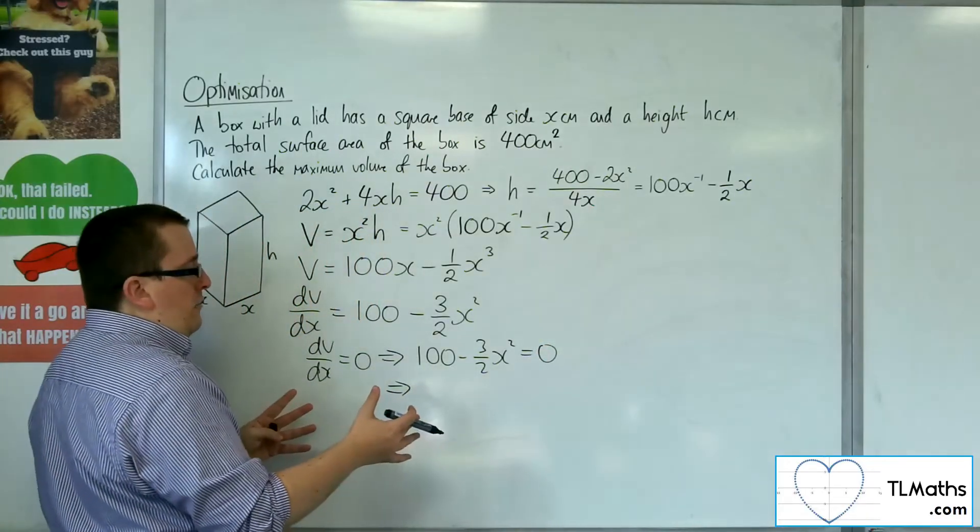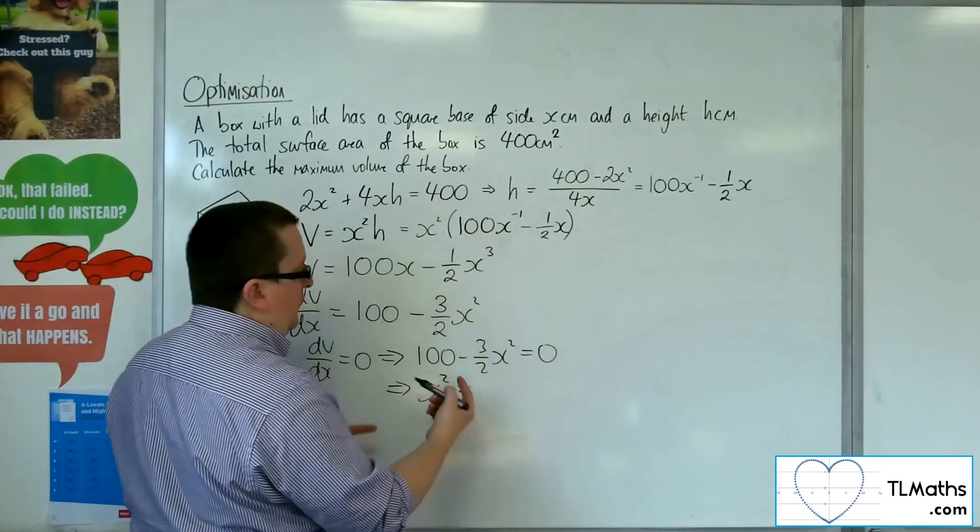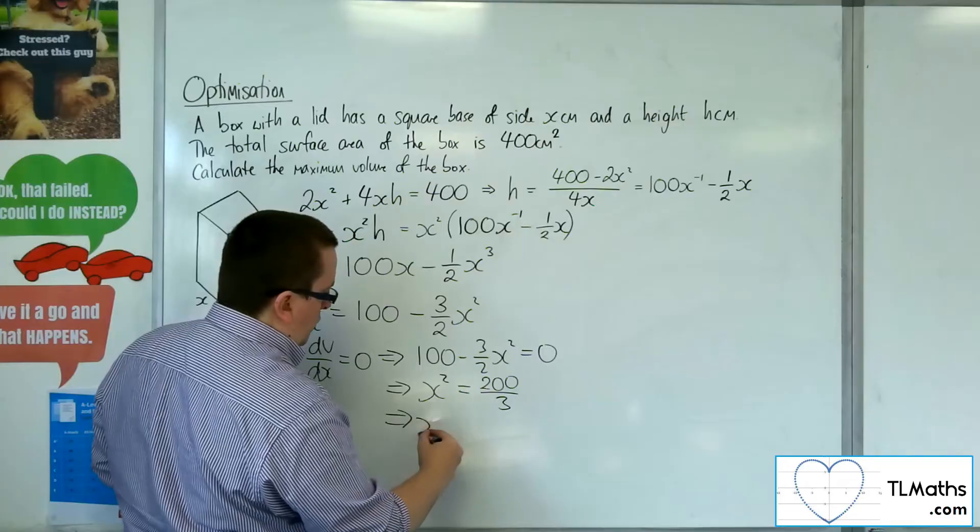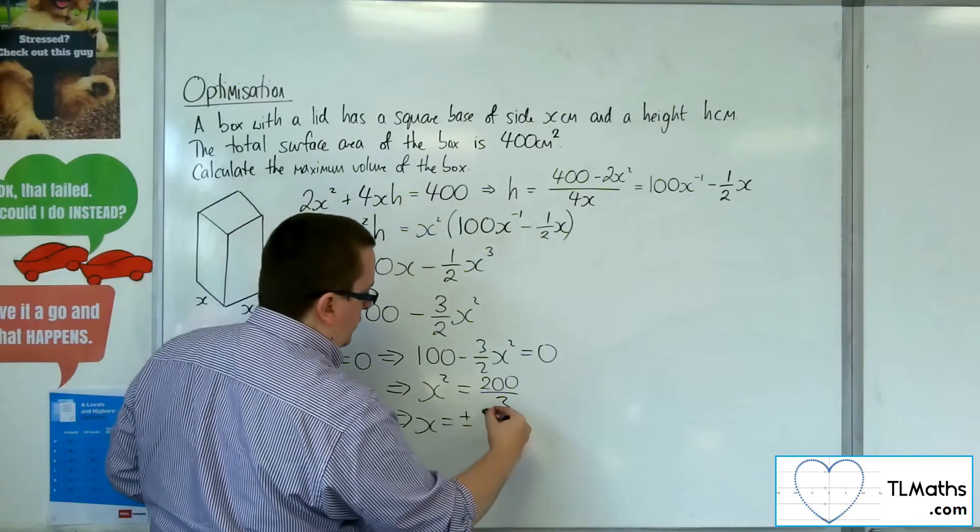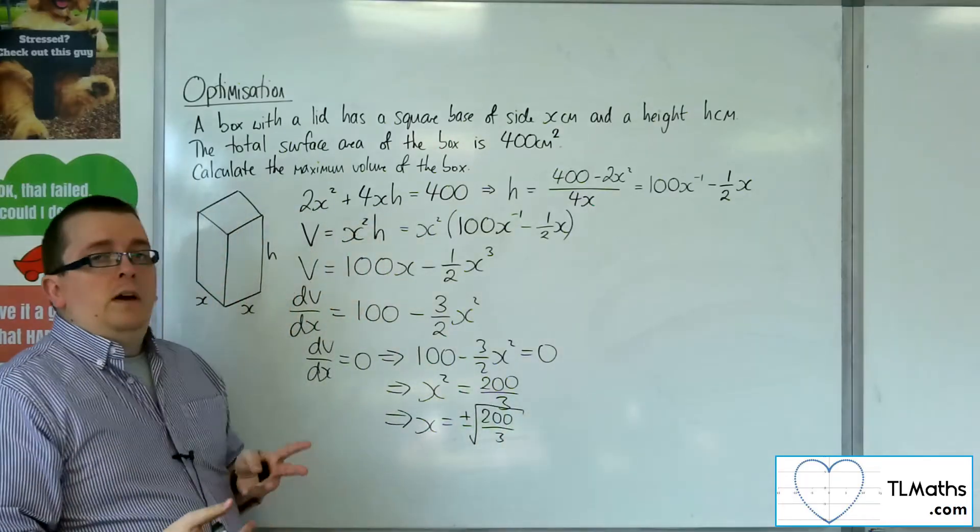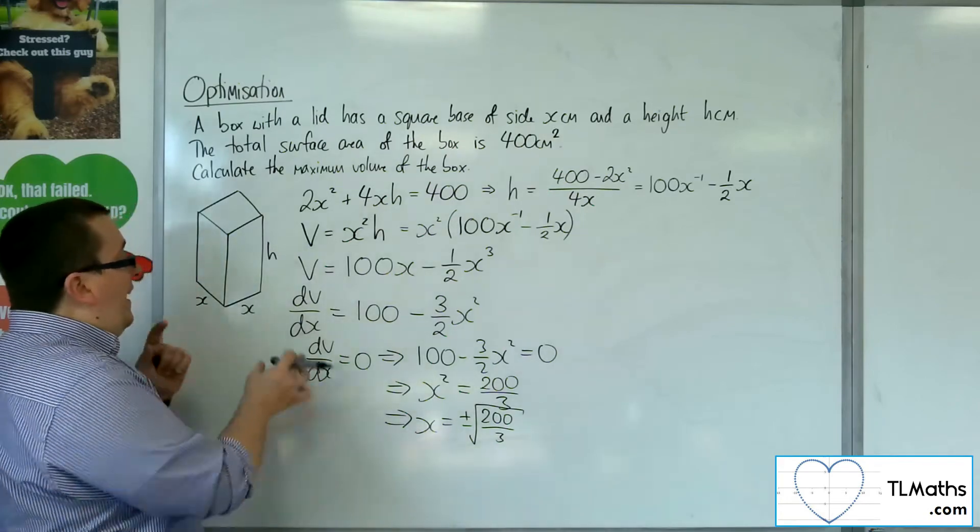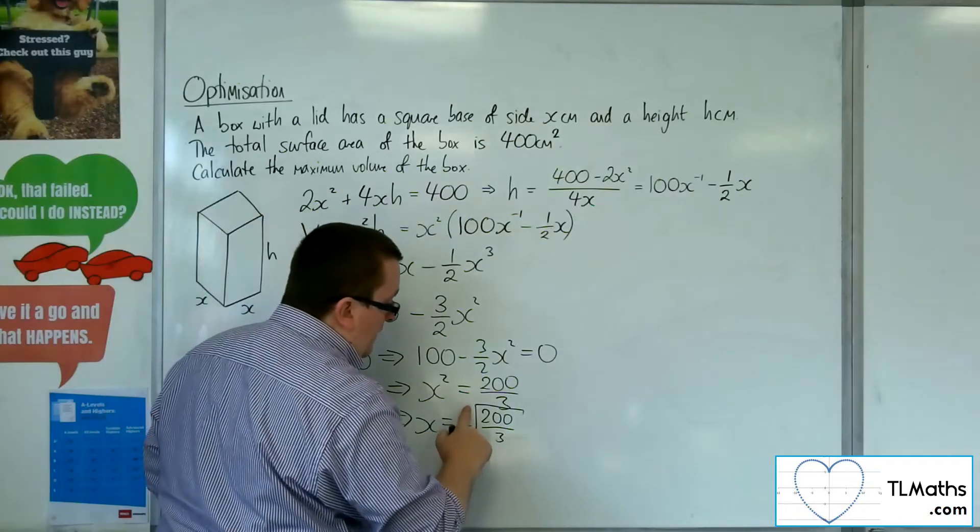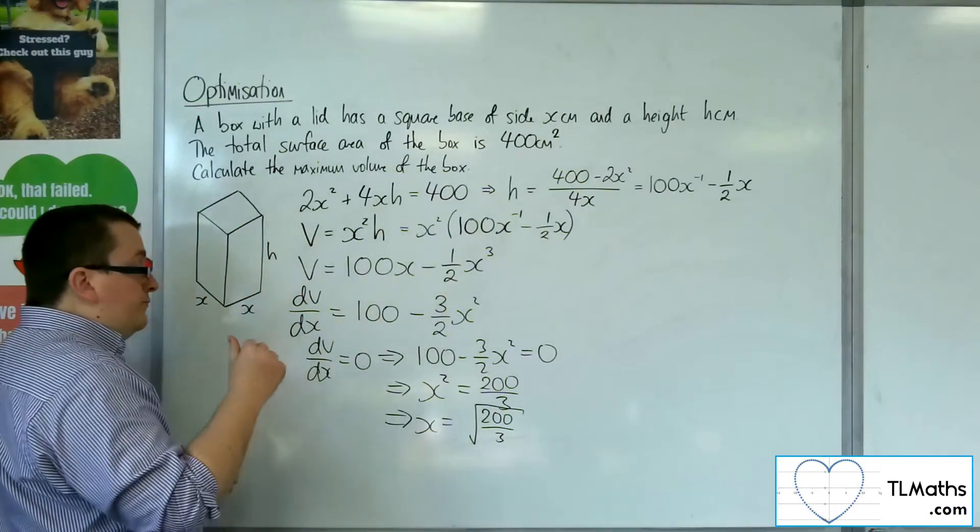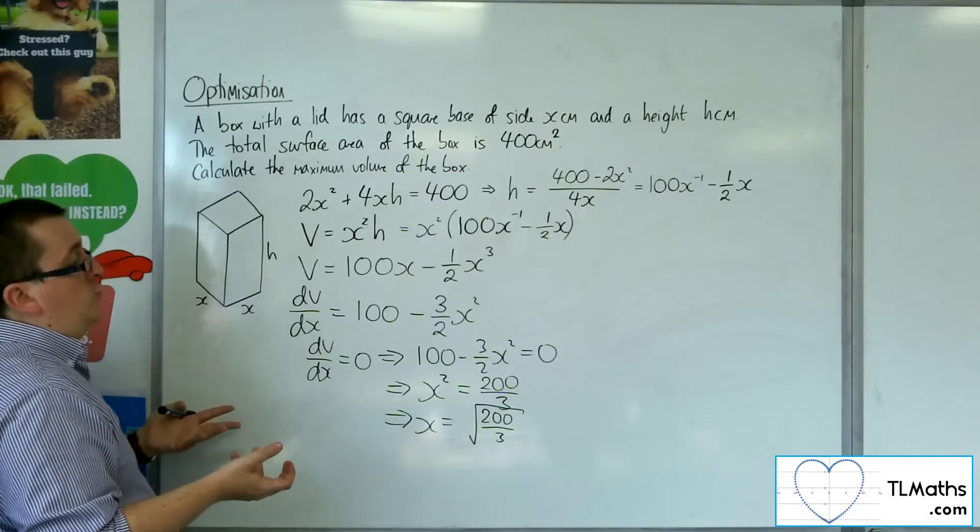If I want to rearrange this, I'm going to multiply both sides by 2, divide both sides by 3, and get the x squared onto the other side. So I'll have 200 over 3. So x will be plus or minus the square root of 200 over 3. Of course, at this stage, thinking about the context of the problem, x is a length, so we can't have that negative. We're just going to take the positive square root. So this is the only stationary point I'm interested in: x equals the square root of 200 over 3.